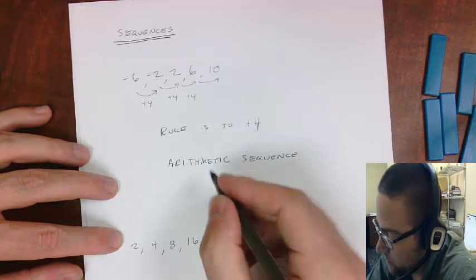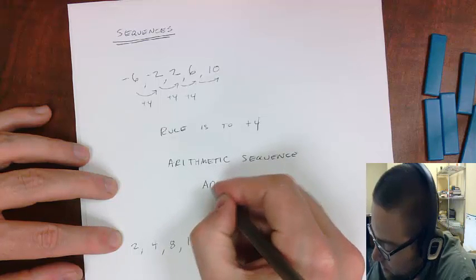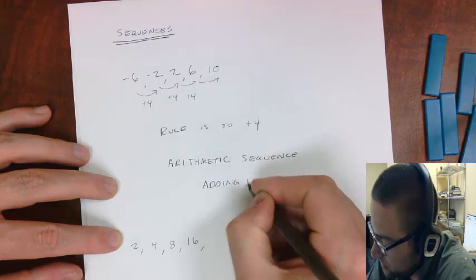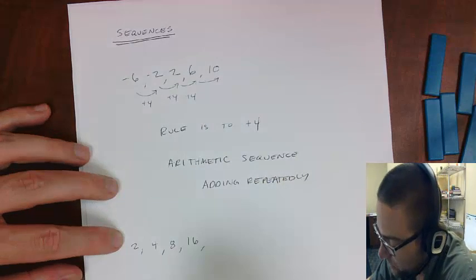This is called an arithmetic sequence. And that involves adding repeatedly.